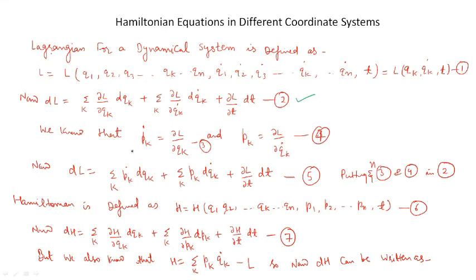Now we know from the generalized momenta and the rate of change of generalized momenta that pk_dot is equal to del L over del qk (equation number 3) and pk is equal to del L over del qk_dot (equation number 4).